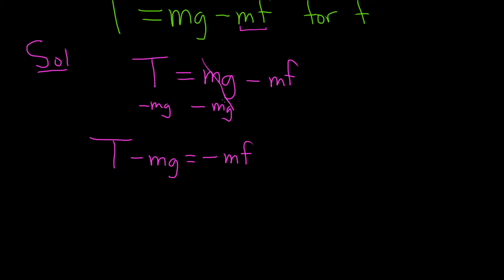Okay. So now we have to solve for f. It's being multiplied by negative m. So all you have to do is do the opposite of multiplication. So that'll be division. You divide by negative m, divide by negative m, and these cancel. And so you get T minus mg over negative m, and that would be equal to f.